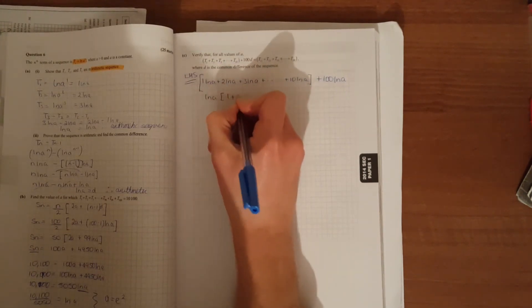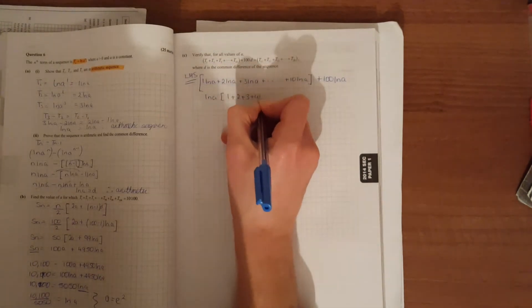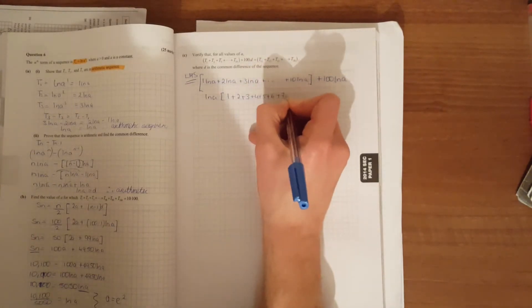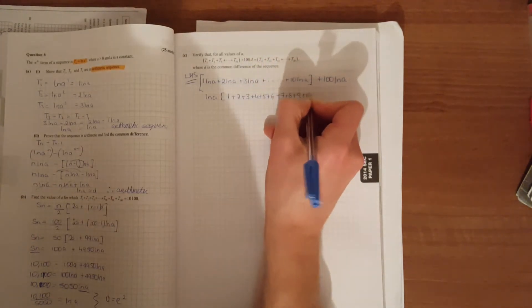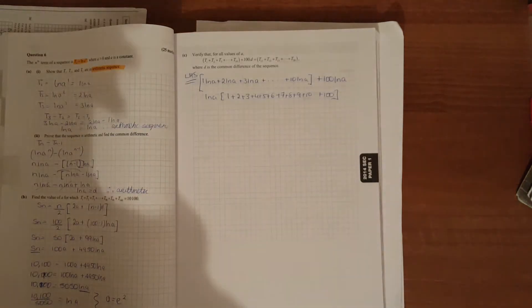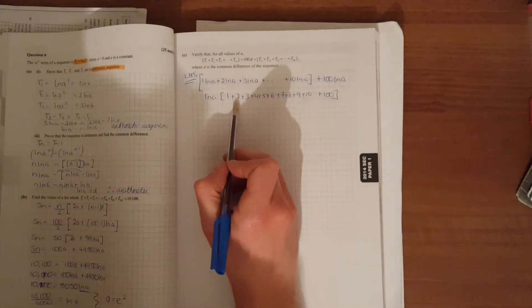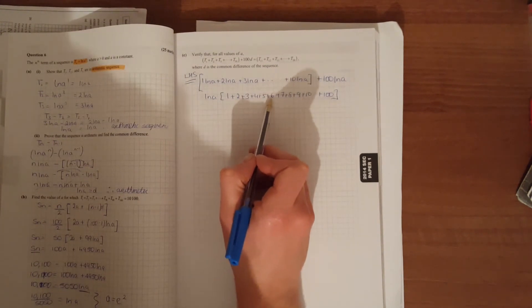And add up your terms: 1 + 2 + 3 + 4 + 5 + 6 + 7 + 8 + 9 + 10. Then plus on 100. When you do that, 10, 15, 20, 21, 28.